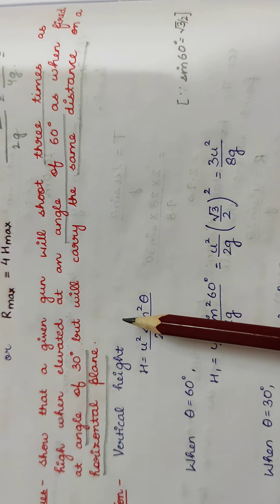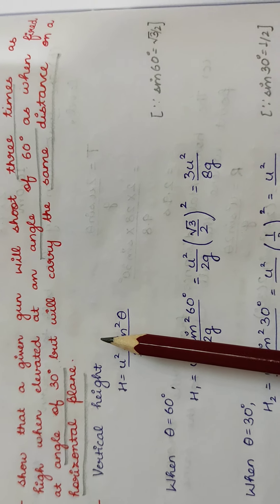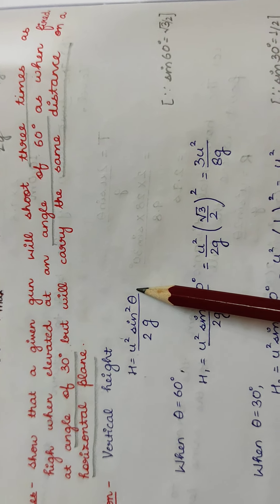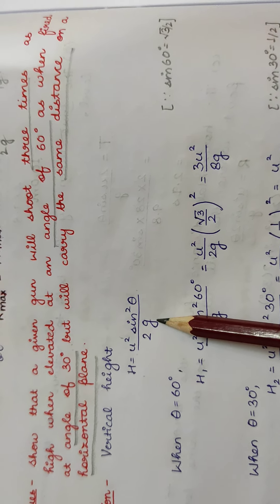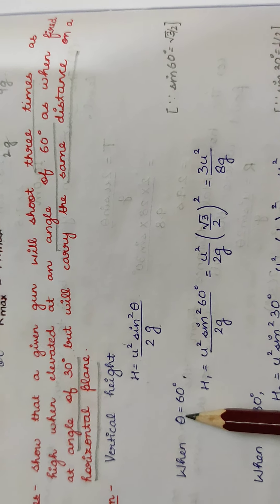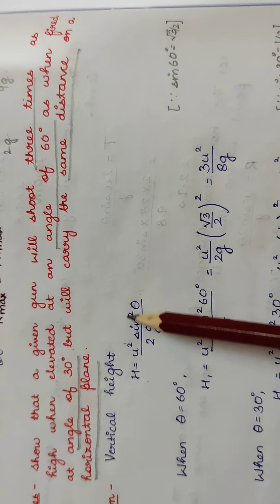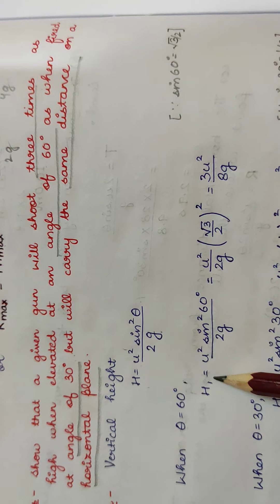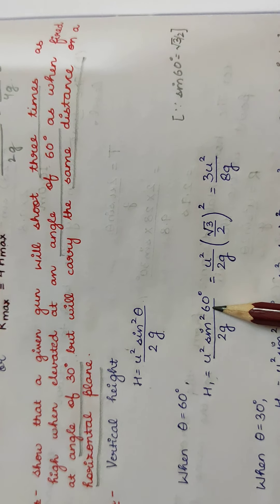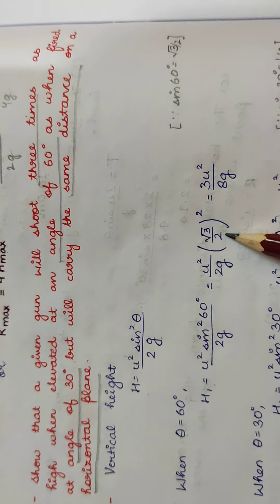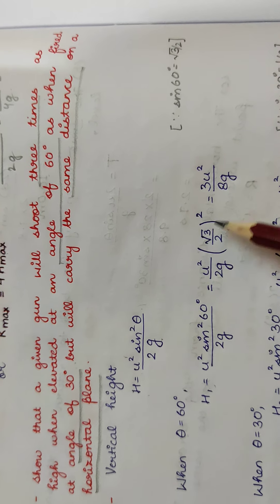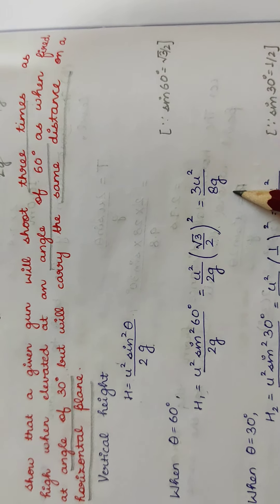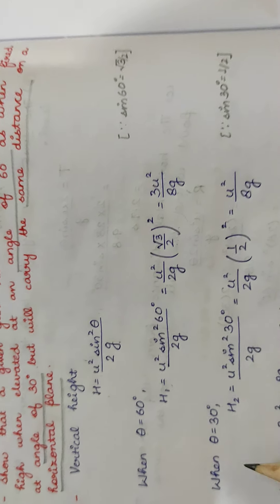Since we are talking about elevation, we need to consider the vertical height. According to the derivation of angular projection, vertical height H is equal to u² sin²θ / 2g. For θ = 60°, let the vertical height be H1. Since sin 60° = √3/2, its square is 3/4, giving us H1 = 3u² / 8g.